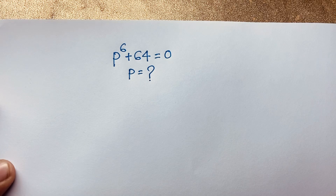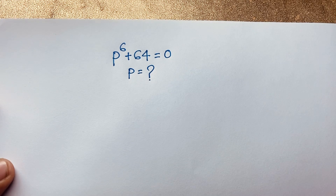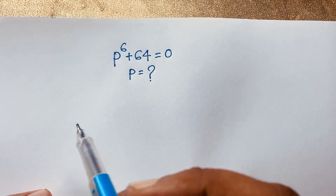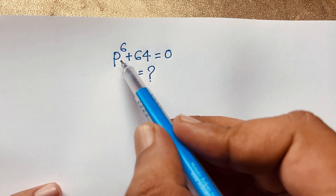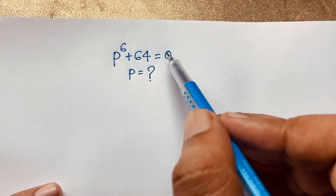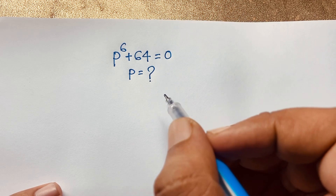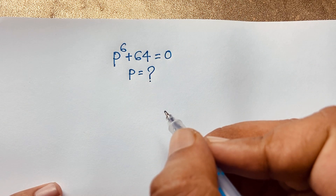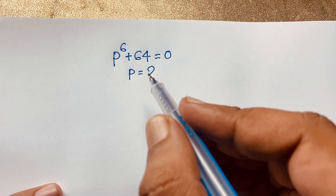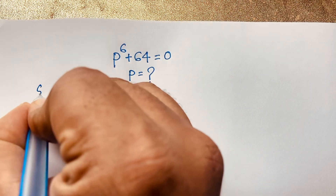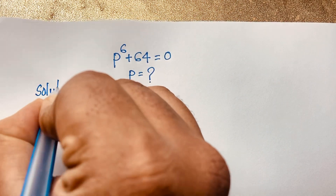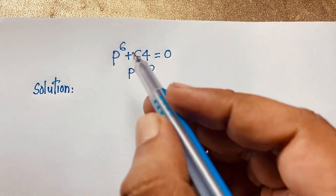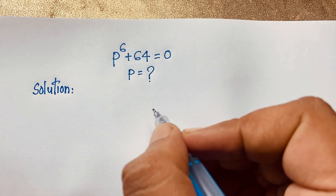Hello everyone, welcome to Russa's classroom. Today we have solved a nice exponential math problem. This question is: p to the power 6 plus 64 is equal to zero. P is equal to what? How to solve this interesting math problem. Our question is p to the power 6 plus 64 is equal to zero.